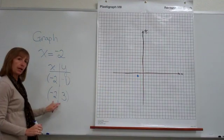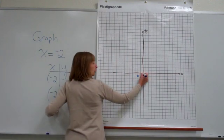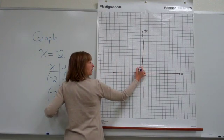For the next ordered pair, negative 2, 3, from the origin, we go left 2, and then up 1, 2, 3.